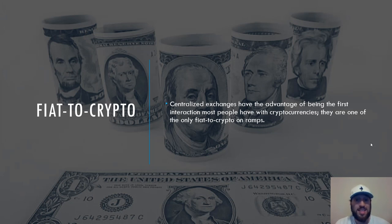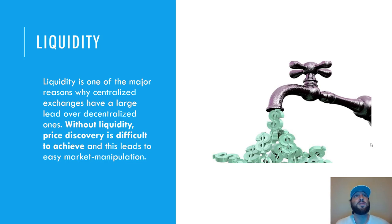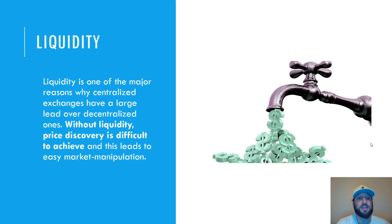From stablecoins, traders can move onto an exchange and then sell for fiat right away. Liquidity is one of the last things, and one of the major reasons centralized exchanges have a large lead over decentralized ones. If there's no volume, no liquidity, it's not going to draw traders or especially whales with large amounts of coins. Without liquidity, price discovery is difficult to achieve and this leads to easy market manipulation.